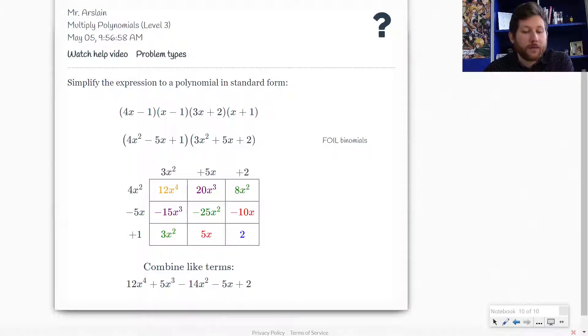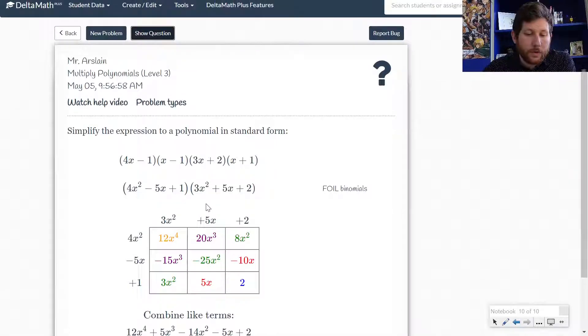and then take the two trinomials and multiply them together. If you felt like you wanted to multiply the first two together and then multiply the third binomial onto that trinomial and then the fourth binomial onto the next polynomial,